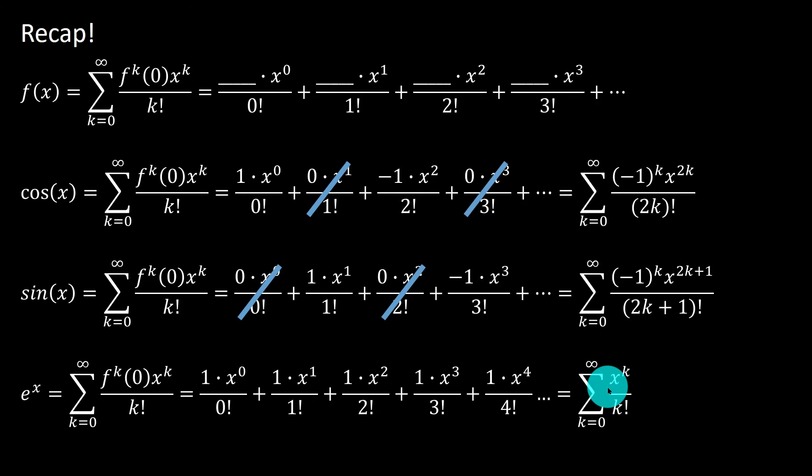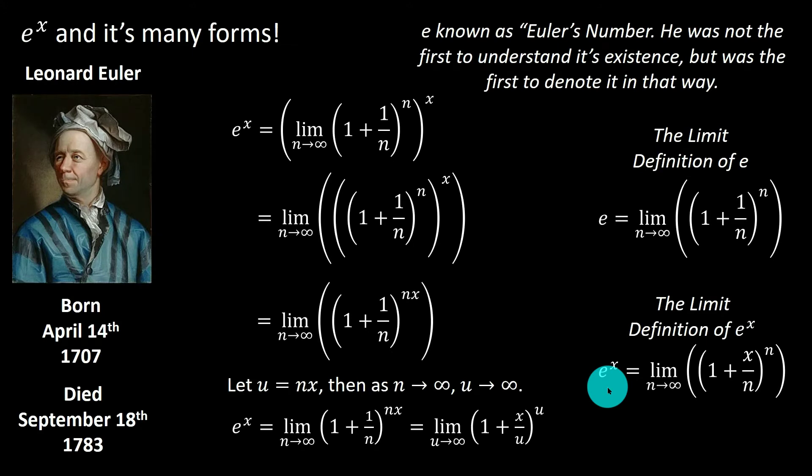At this point, you should have some sort of spider sense tingling, because e to the x is so common, you've seen it in many applications up to this point, especially when you're looking at compounding interest continuously, that e naturally arrives in the P e to the rt formula, commonly called PERT. And when you were looking at PERT, you saw this limit definition for e. And if e is this, we want a representation for e to the x. So how do we go from an e to an e to the x representation?